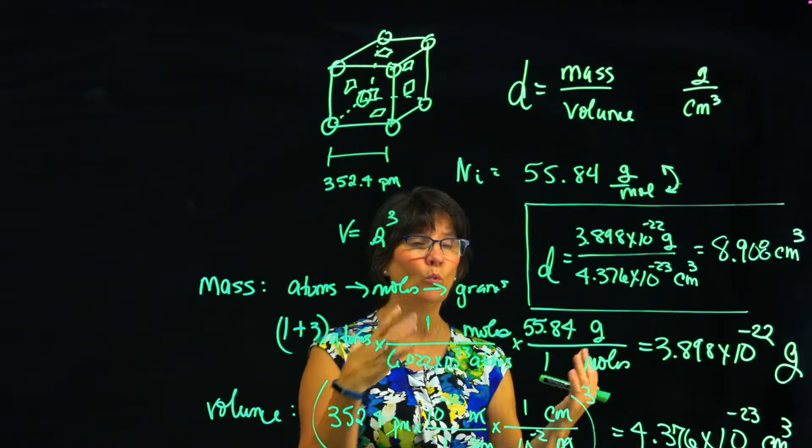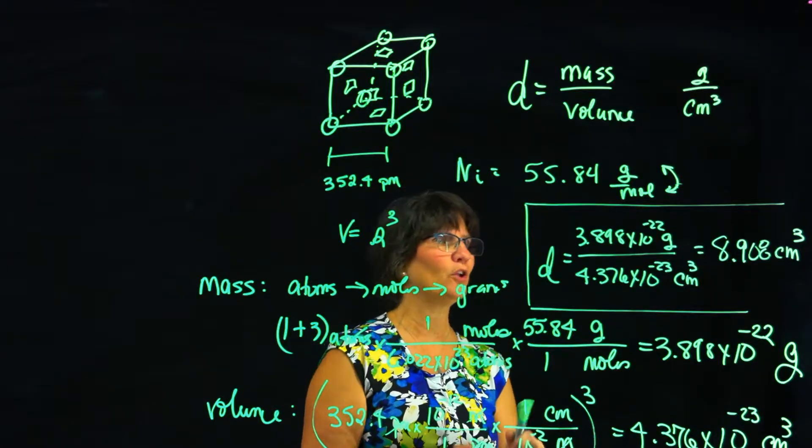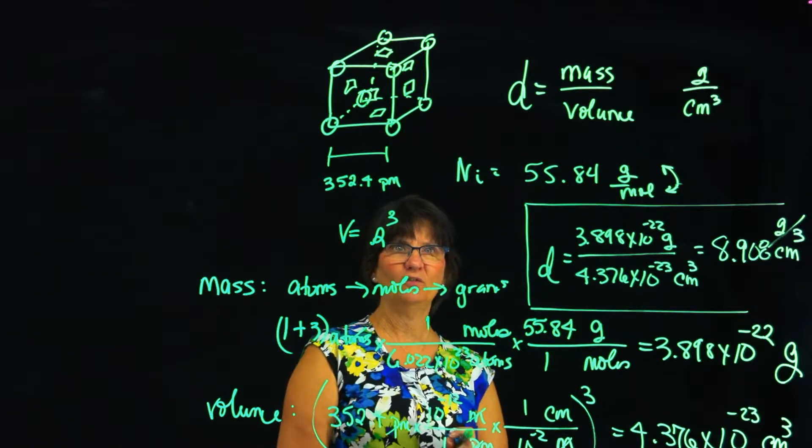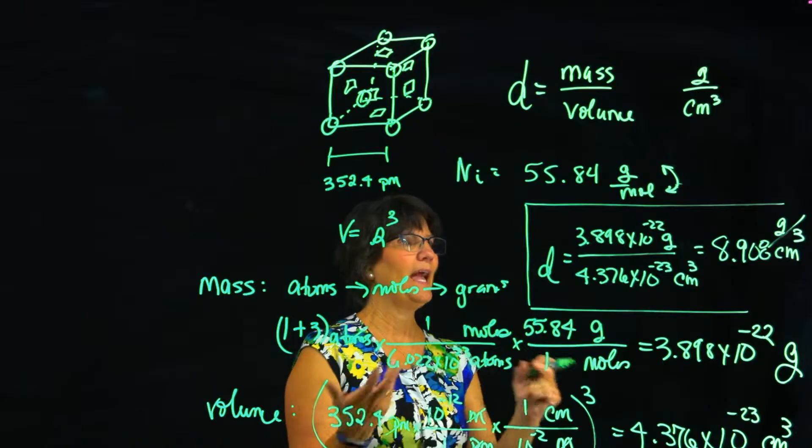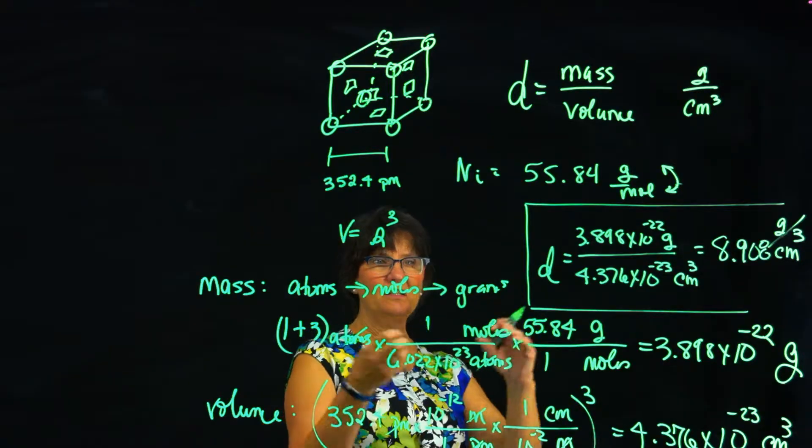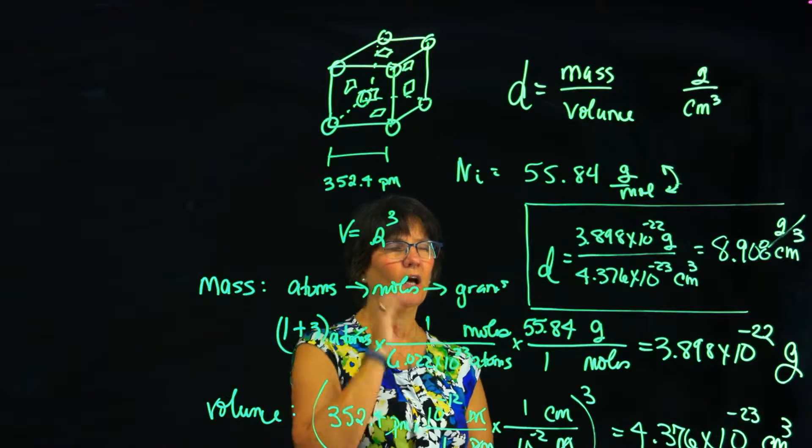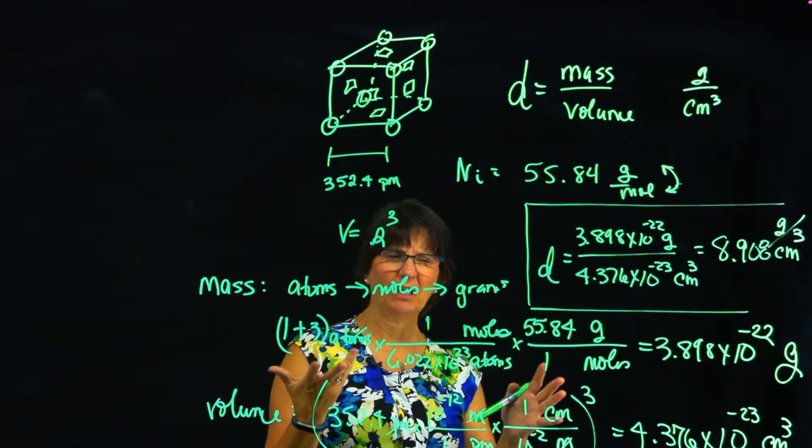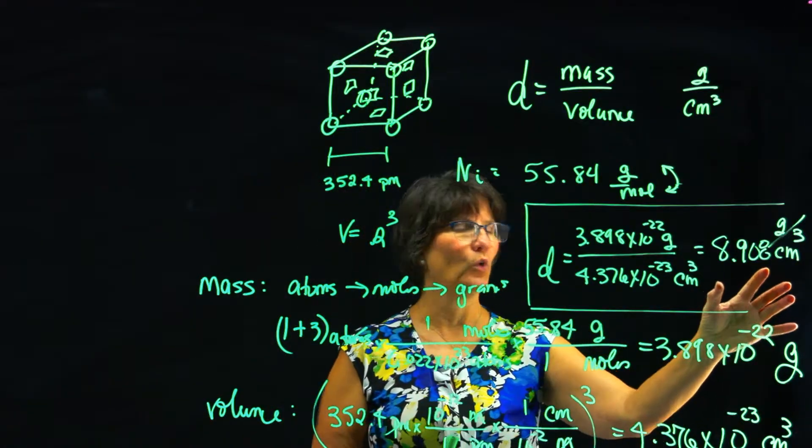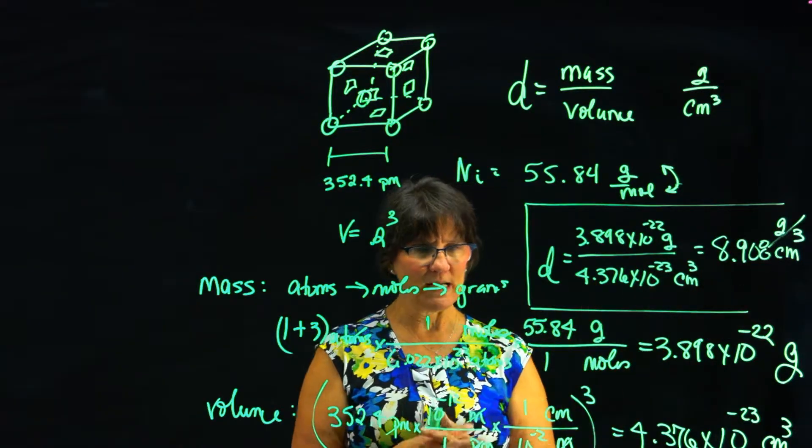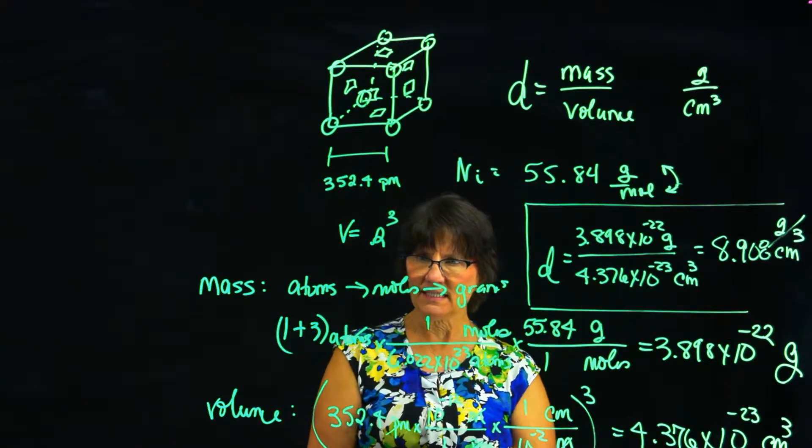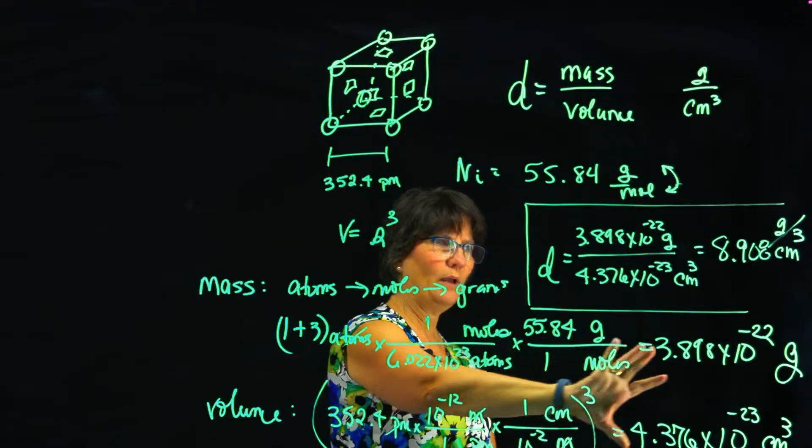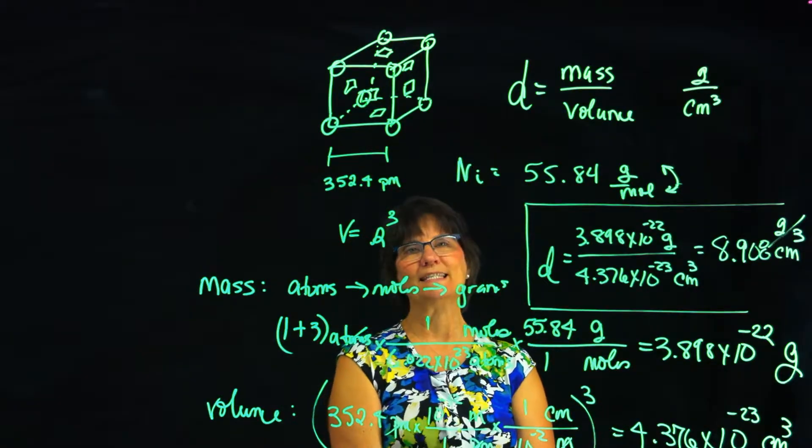And we ask ourselves, is that a reasonable number? Does it make sense? Well, what is water? Water has a density of 1 gram per cubic centimeter. A piece of nickel ought to fall to the bottom. And having numbers in the 1 to 10 range is very, very realistic. Lead is up around 11. Gold is around 22, 23, somewhere like that. I know it's in the 20s, early 20s. And so that's a reasonable number for us. So that is how you take your information of a unit cell and do calculations that you already know how to do in order to obtain a value for density.